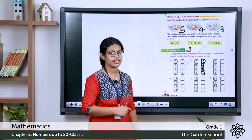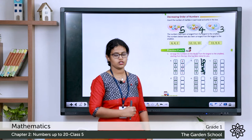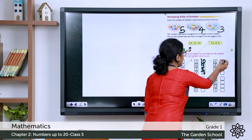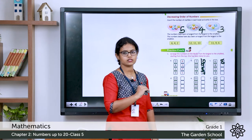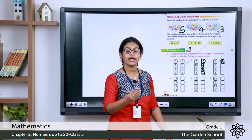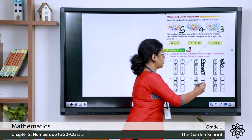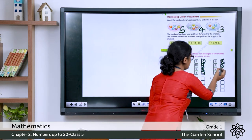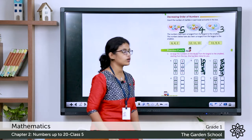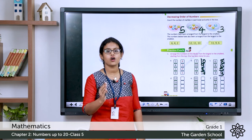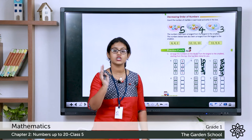Let's look at the next question: 6, 8, 5, 3. Which is the larger number? 8. Counting backward: 10, 9, 8 — then 7 is not here, then 6 — 6 is here, then 5, then 3. So the right order is 8, 6, 5, 3 — this is in decreasing order from the largest to the smallest.